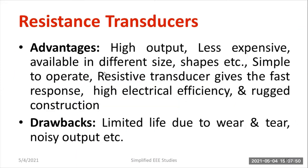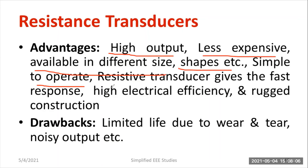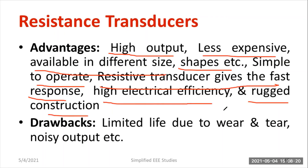Now let us list the advantages of the resistive transducer. It provides a wide range of output with high output levels, and it is cheap and available in different sizes and shapes. It is simple to operate, following the equation R = ρL/A. The resistive transducer gives faster response compared to other types of transducers, and it has high electrical efficiency and rugged construction.